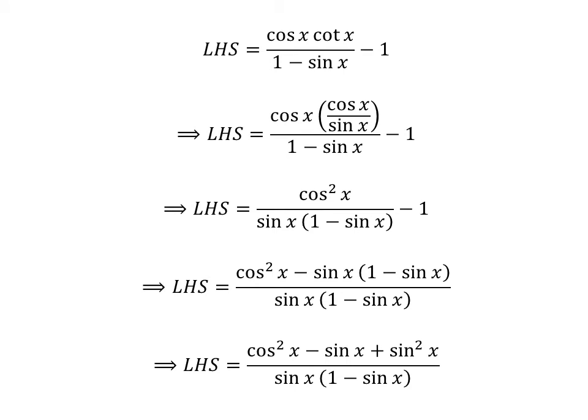Carrying out the multiplication gives us the left hand side equal to the square of cosine of x minus sine of x plus the square of sine of x, all upon sine of x times 1 minus sine of x.